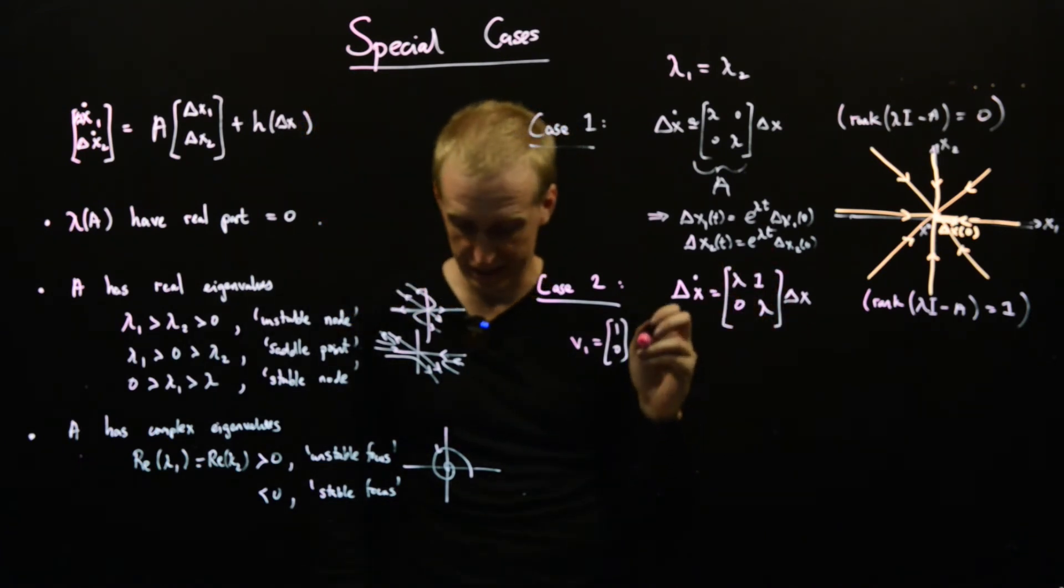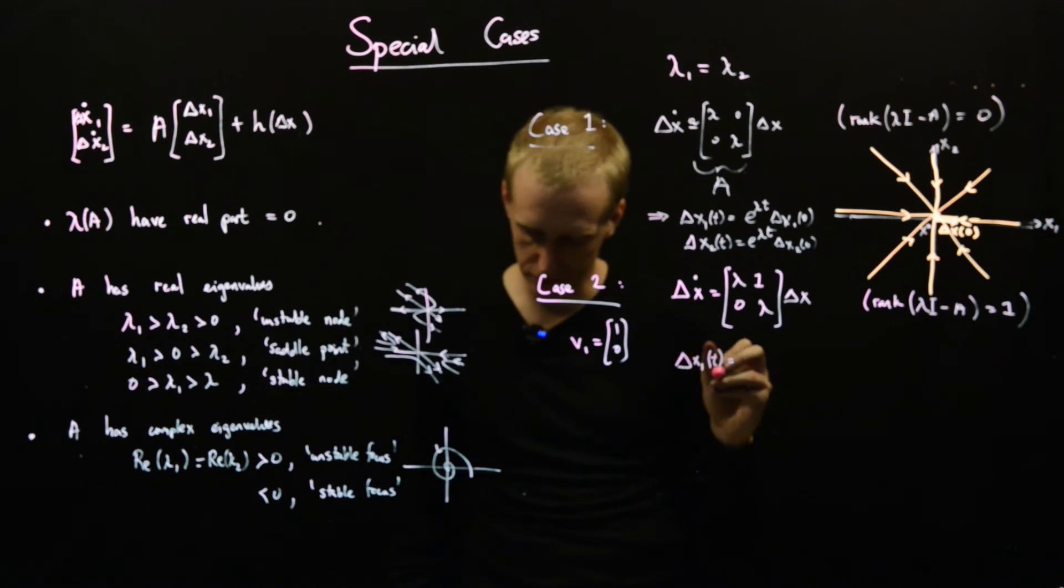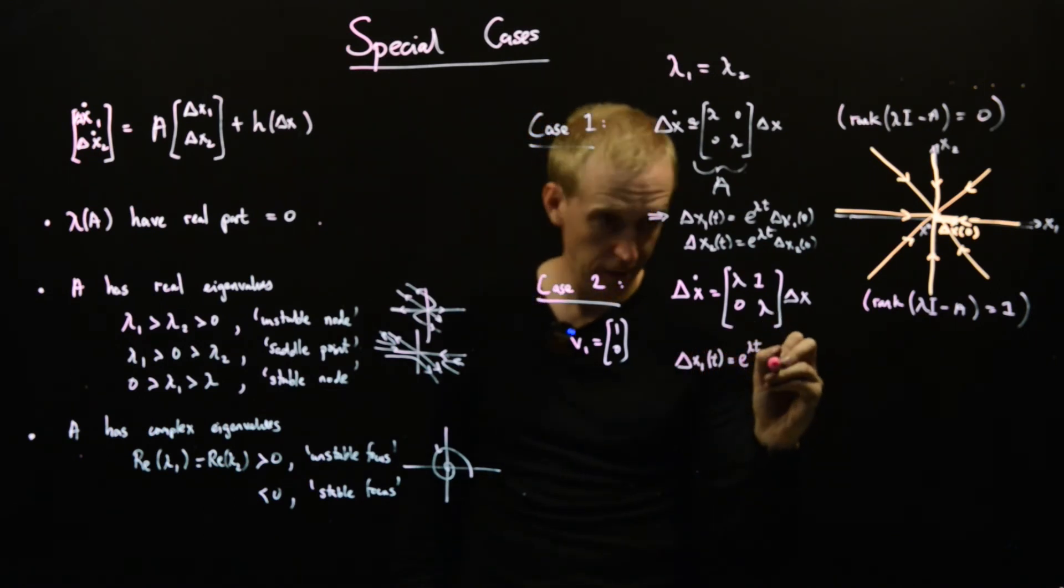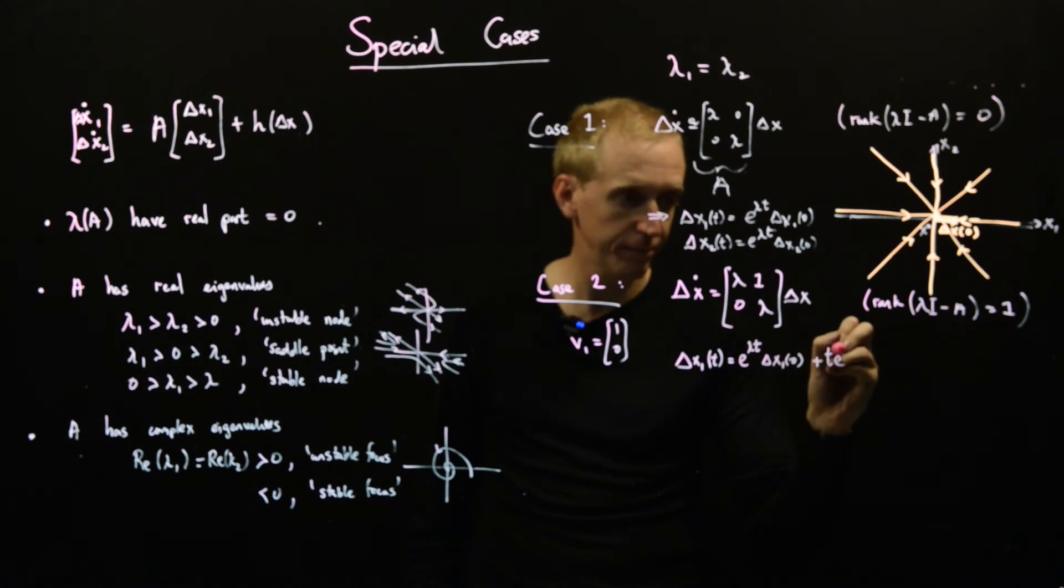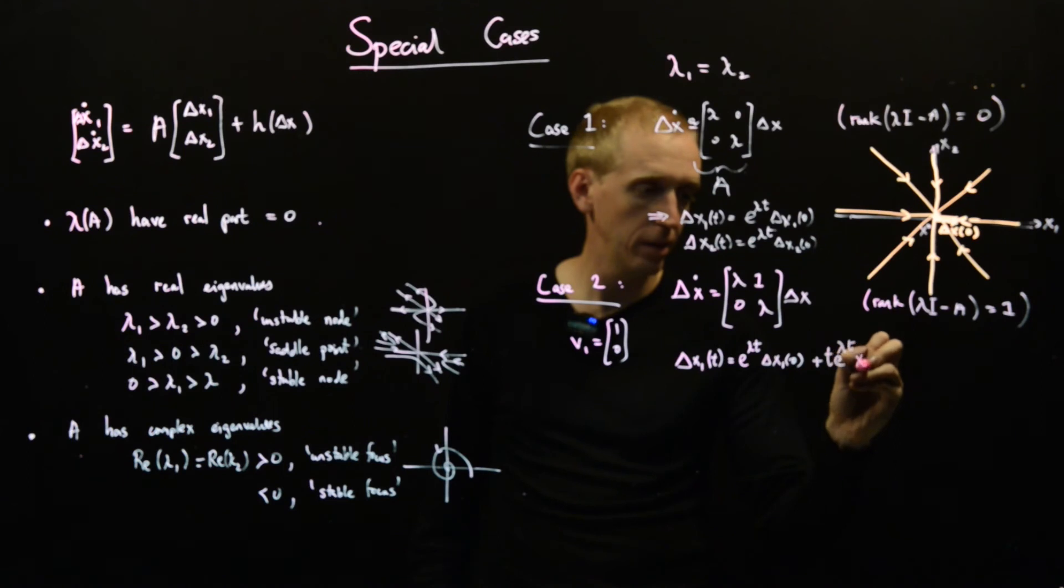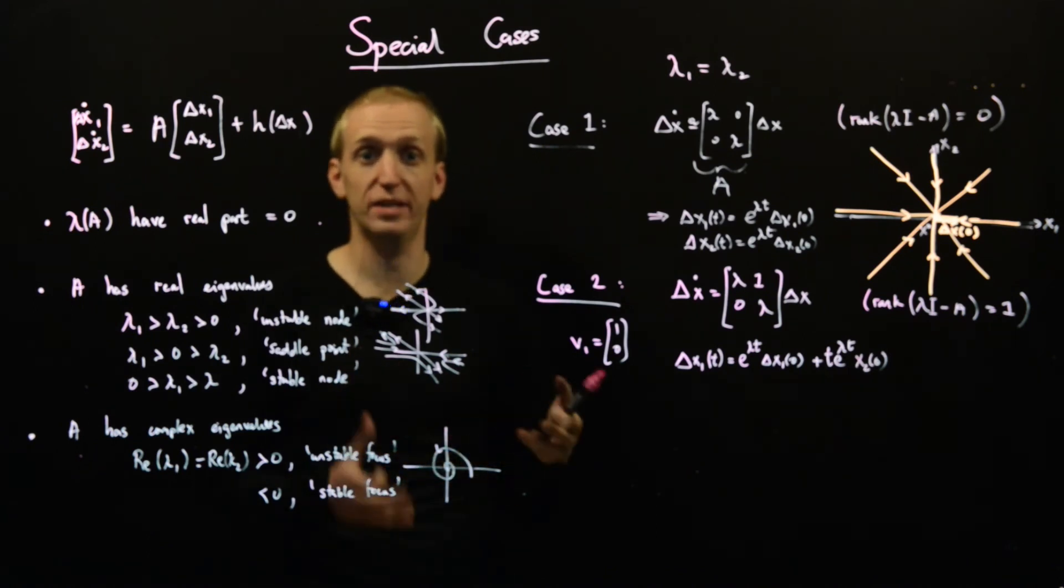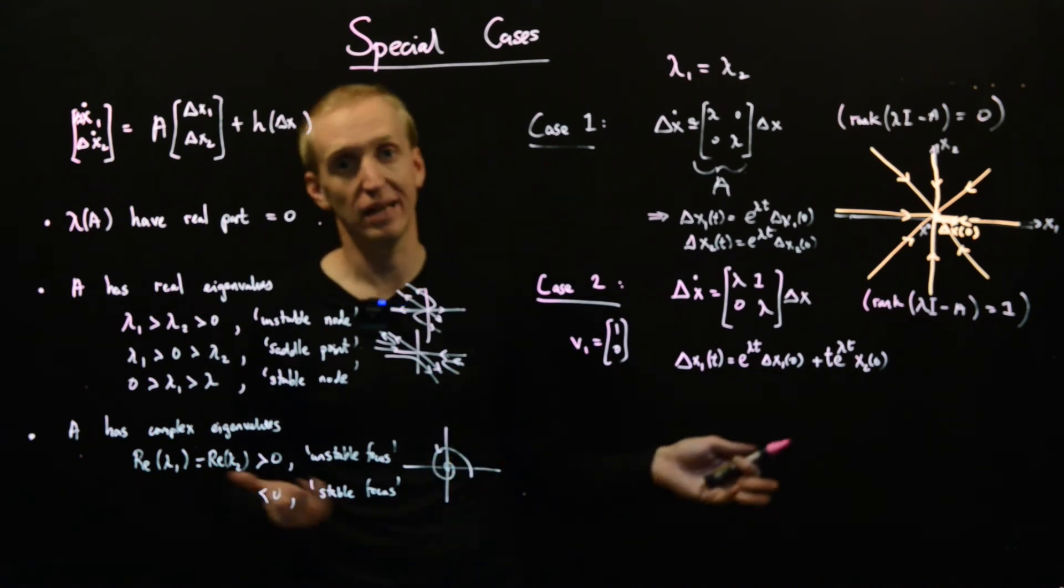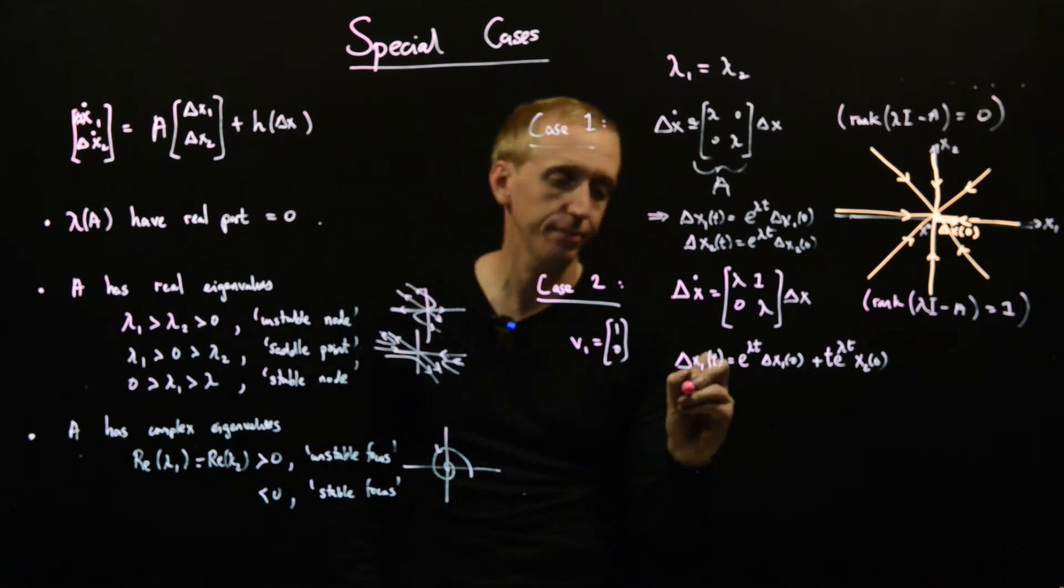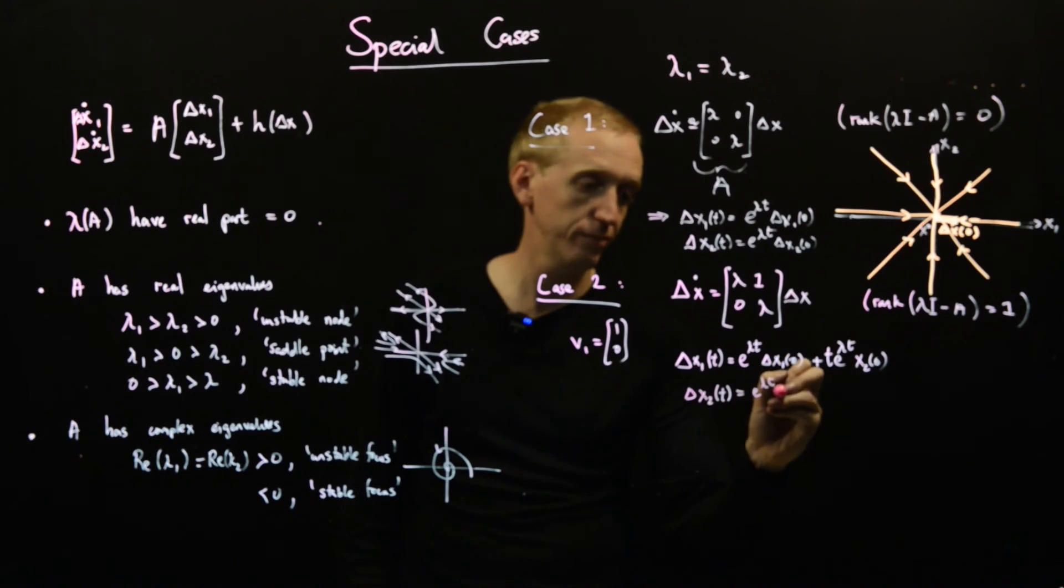And what you find is that delta x1 of t is equal to e to the lambda t delta x1 of 0 plus t e to the lambda t x2 of 0. And I don't know if you remember, like all of those years ago when you were solving differential equations at school, there was always that annoying case where you had to start shoving t's into the solution of your second order differential equations. And that's exactly what's happening here. And then similarly, we can find that delta x2 of t is equal to e to the lambda of t. And then here we have delta x2 of 0. So this is our solution.